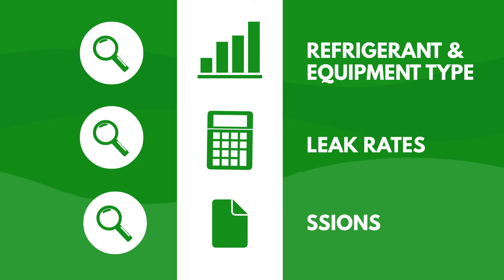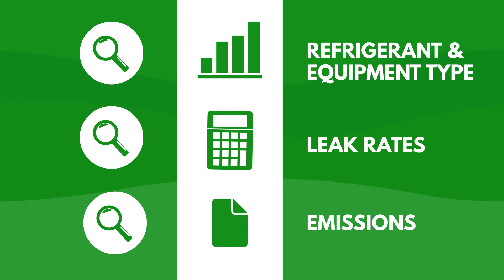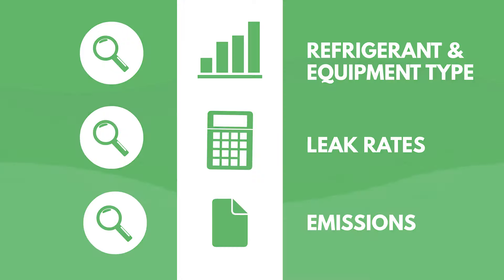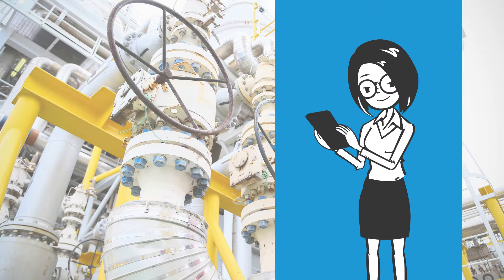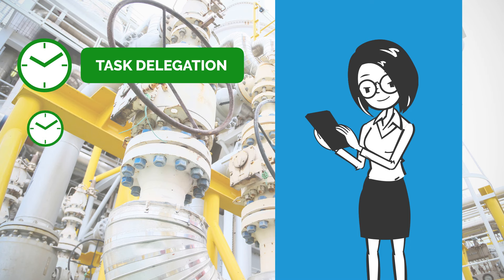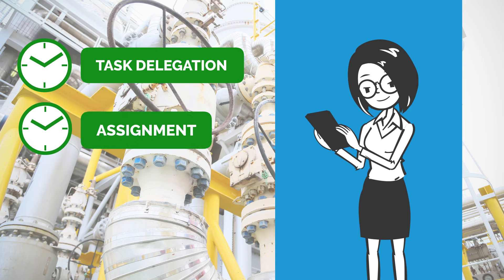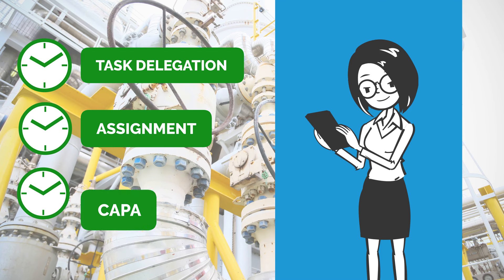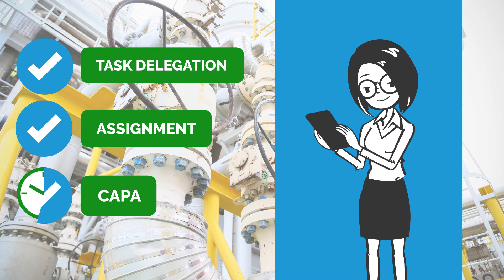Reporting requirements are triggered if emissions are above the EPA-defined threshold using advanced software features. ERA's tool also expedites her refrigerant unit inspection task delegation, assignment, and corrective and preventative action while ensuring that service and maintenance are done on time.